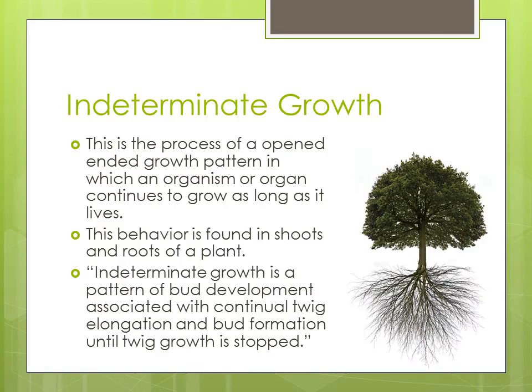The next topic we're going to talk about is indeterminate growth. Once again, we need to understand its definition. This is a process of an open-ended growth pattern in which an organism or organ continues to grow as long as it lives. This behavior is mainly found in roots and shoots of a plant. Indeterminate growth is also a pattern of bud development associated with continual twig elongation — meaning continuous twig lengthening and bud formation until twig growth is stopped.